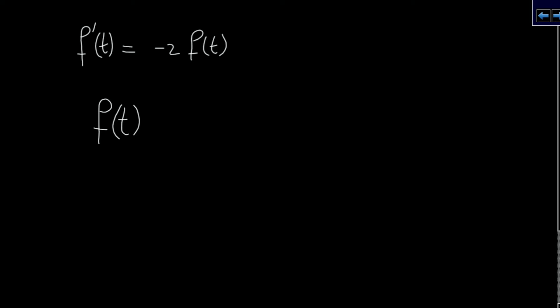So we have f(t) is equal to e to the power minus 2t. We can check that the derivative of this function is minus 2 times e to the power minus 2t, which is equal to minus 2 times f(t).